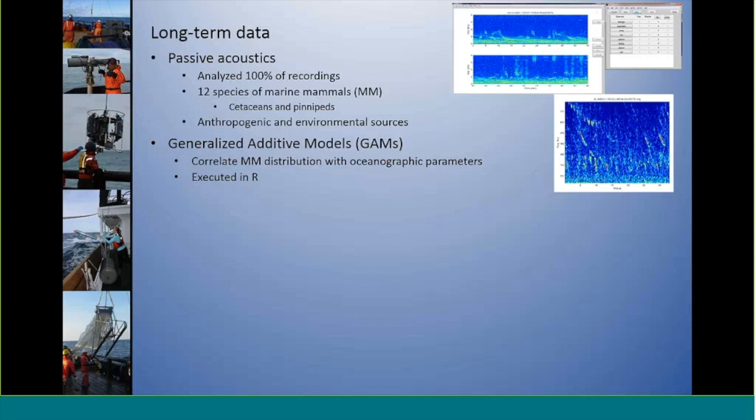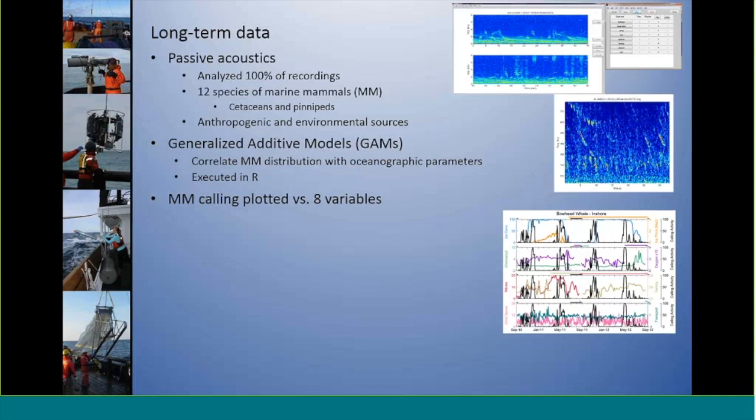We then used generalized additive models to correlate those marine mammal distribution data with oceanographic and environmental parameters, executed in R. To determine if those correlations had positive or negative associations, we plotted those against eight different oceanographic variables. For our short-term data from our transect line sampling, we plotted those with the marine mammal visual and acoustic results to try and get an ecosystem-based snapshot of what was happening in the Chukchi.